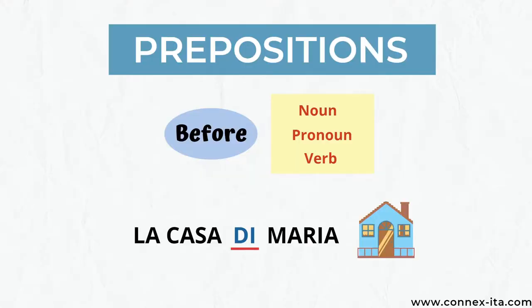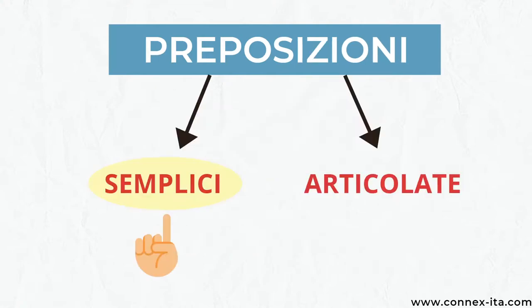Ciao and welcome to a new Italian lesson. Today I want to give you an overview of the prepositions in Italian and their uses. We have so many things to cover so let's start. First of all, a preposition is a word that sits before a noun, a pronoun or a verb to show its relationship with another word in the sentence. For example, 'la casa di Maria.' Here the preposition 'di' tells you that the house belongs to Maria. In Italian we call prepositions 'preposizioni' and they can be of two types: 'semplici' or 'articolate.'